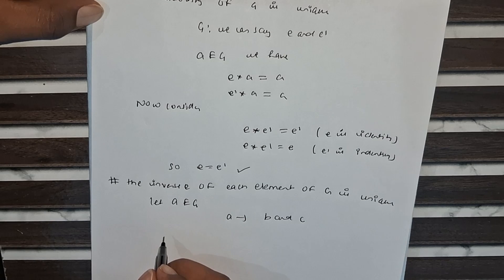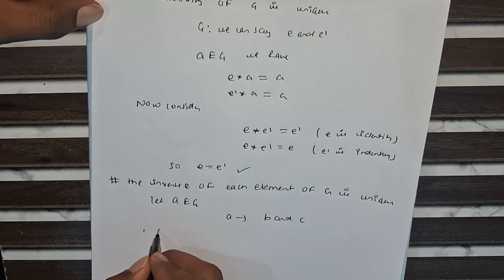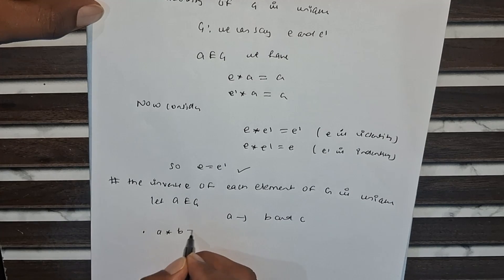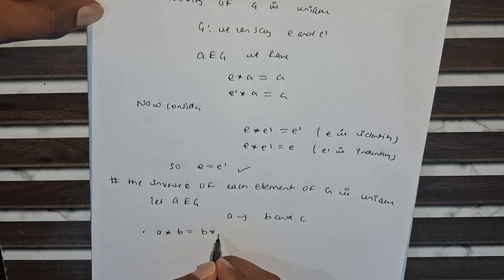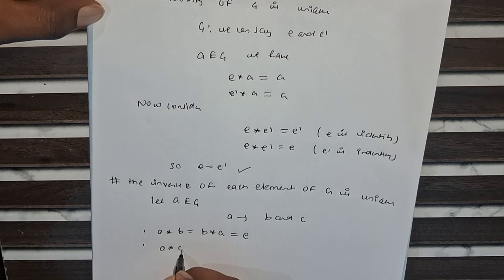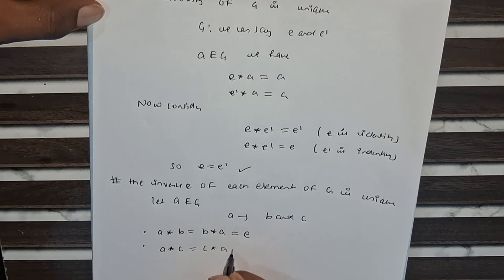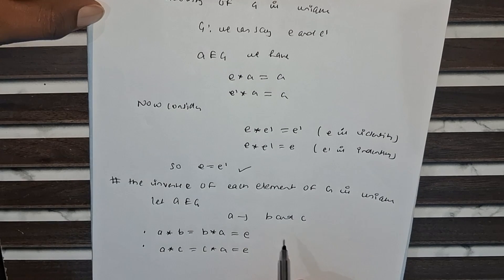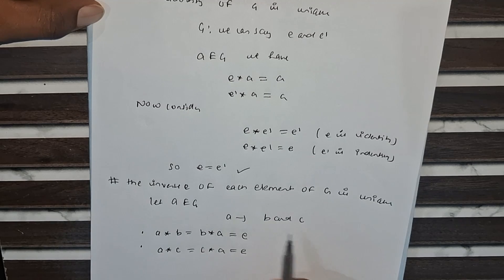By the definition of inverse, A times B equals B times A equals E. In the second case, A times C equals C times A equals E, because here we consider two inverses of A: B and C.